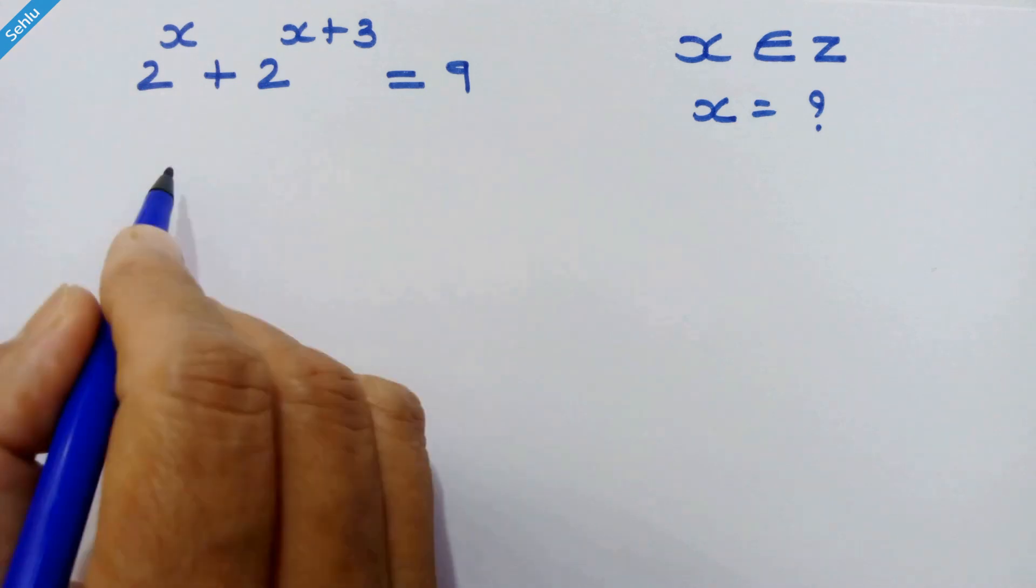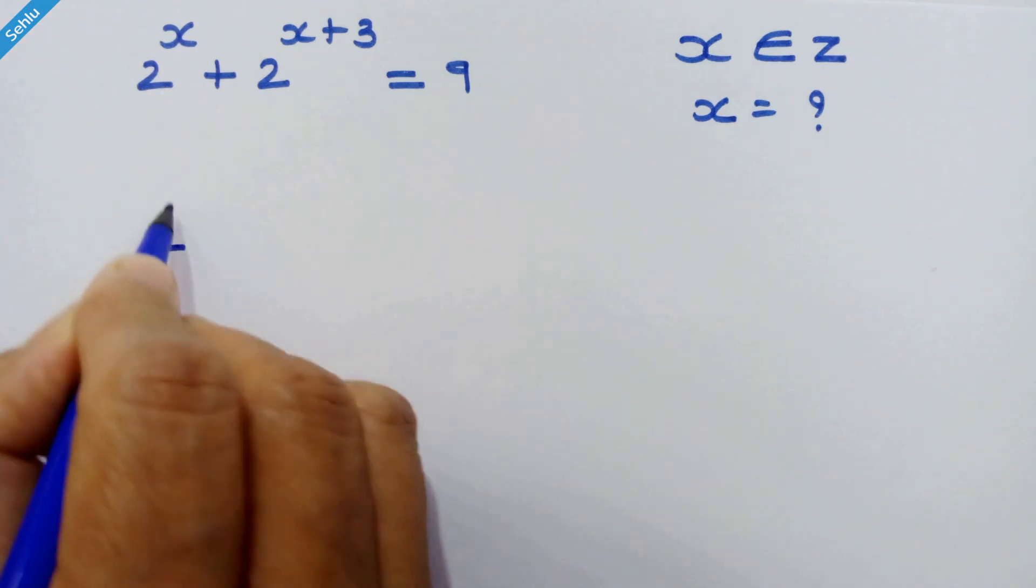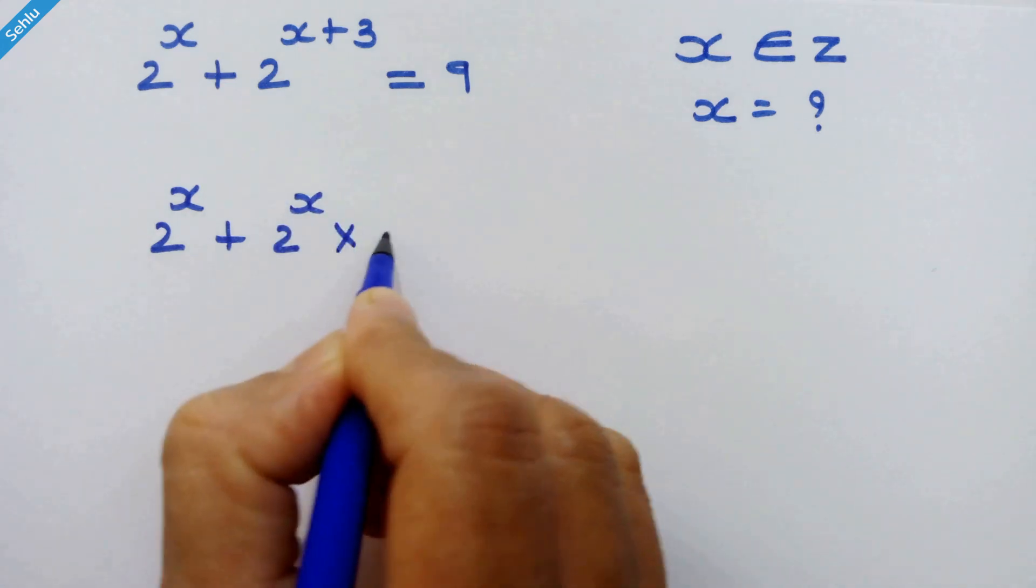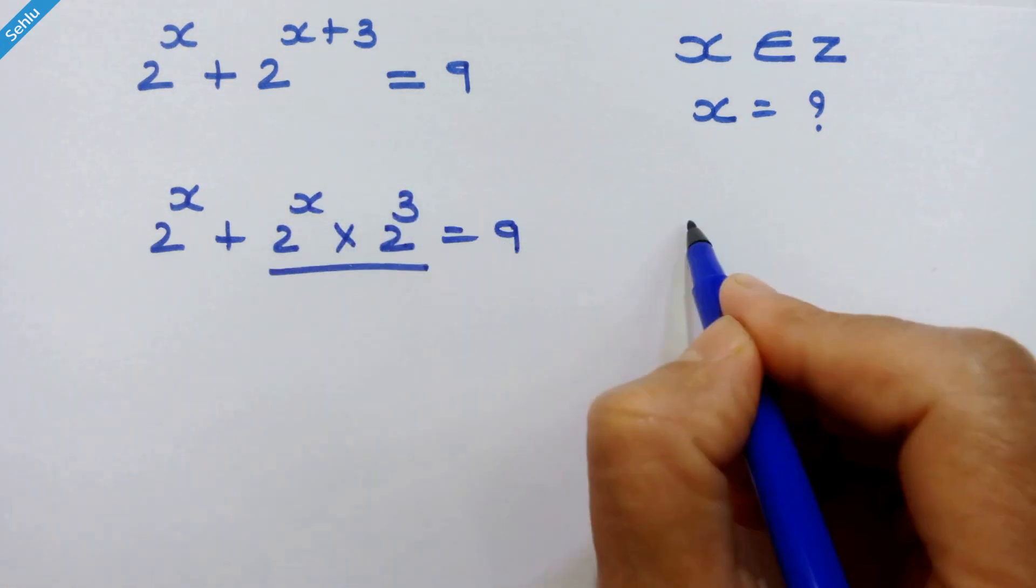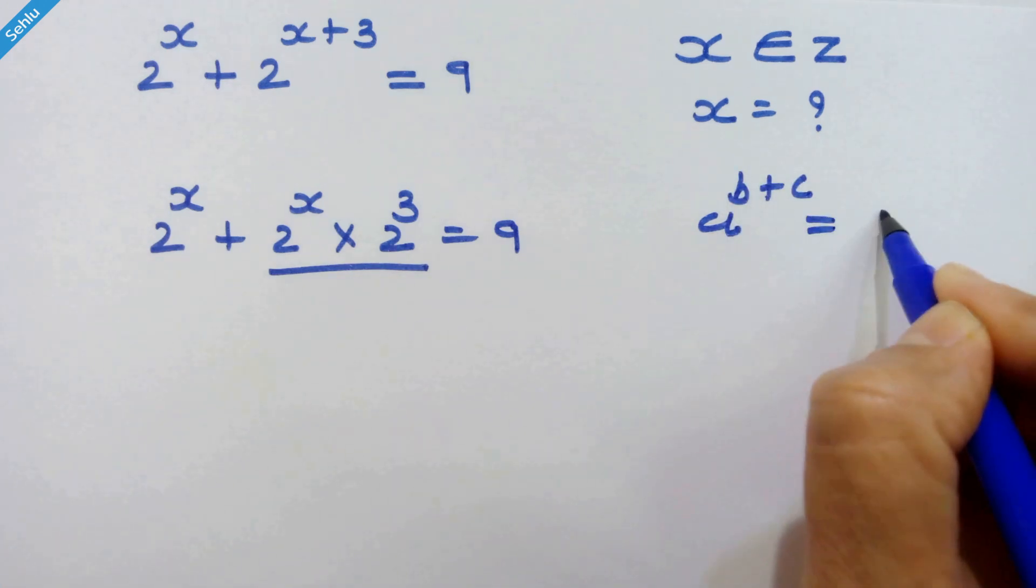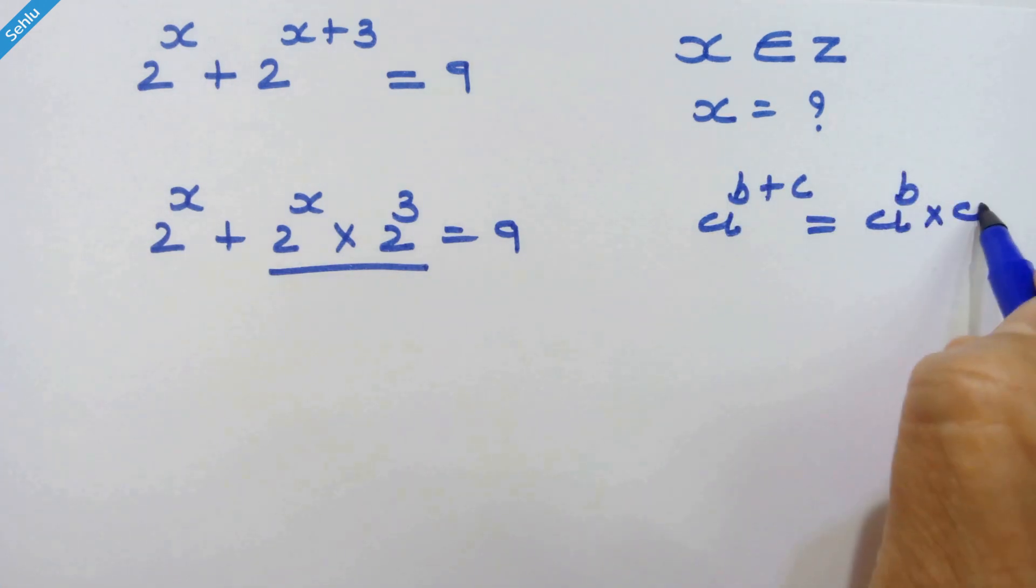So let's start. Here we can write 2 raised to x plus 2 raised to x into 2 raised to 3 is equal to 9, because if we have a raised to b plus c then we can write a raised to b into a raised to c.